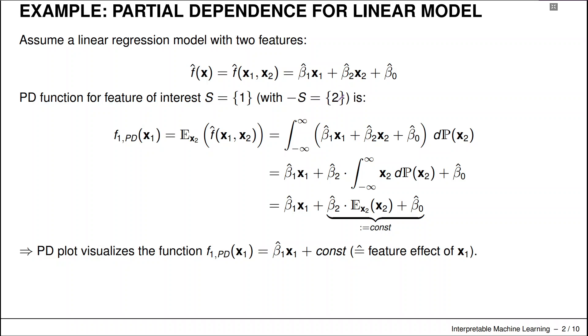So all of the remaining features here are only two. So minus s is just the second feature. So now we want to compute this partial dependence function with respect to x1. So we have to integrate out with respect to x2.